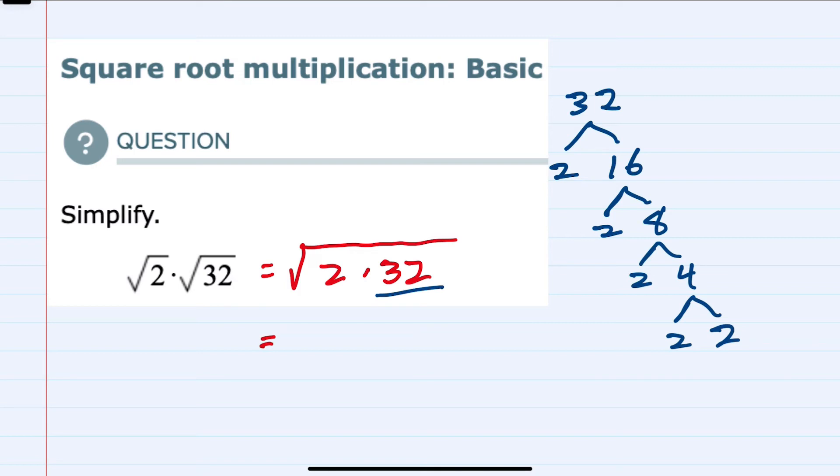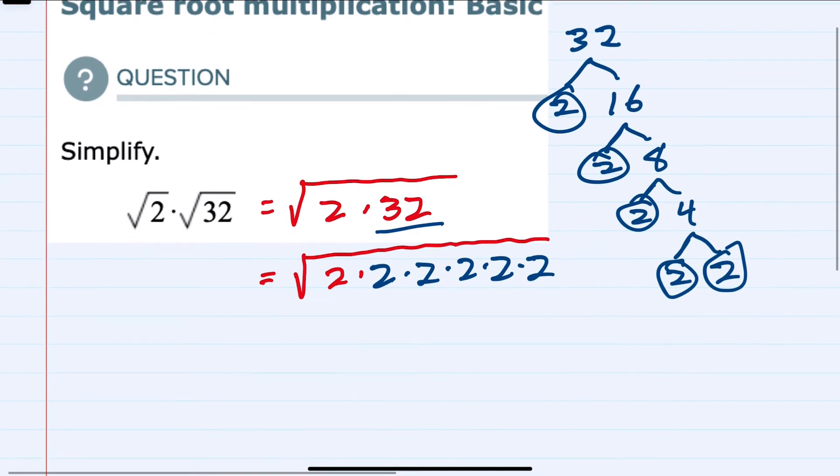So this is the square root of 2 times, and then the 32 is these five 2s. So the radical can now be simplified.